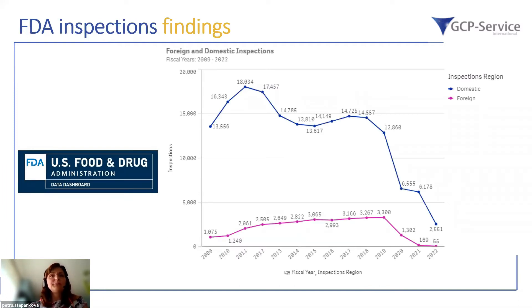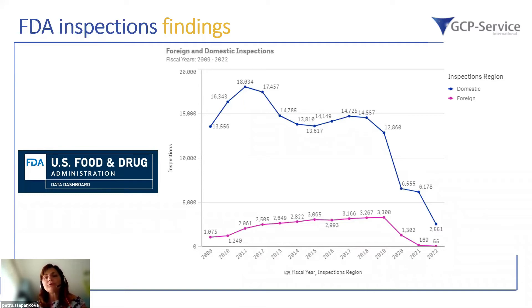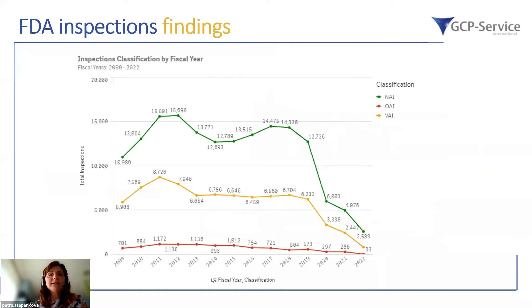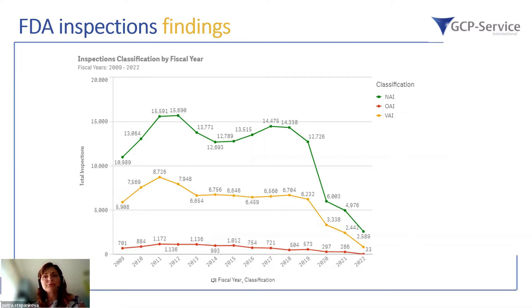On the FDA pages, there is a data dashboard available — a very interesting tool where you can filter foreign and domestic inspections based on the year selected, country selected, or type of inspection. You can find many data including findings. When filtering based on findings, the trend until 2021 was decreasing.